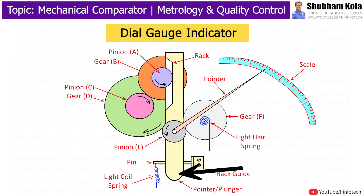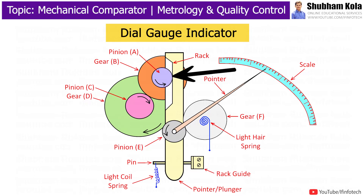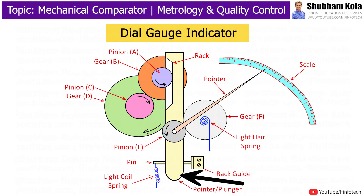The Dial-cage consists of a plunger which slides in a bearing and carries a rack at its inner end. The rack meshes with pinion A, which drives another set of gears and pinions. The plunger is kept in its normal extended position by means of a light coil spring.